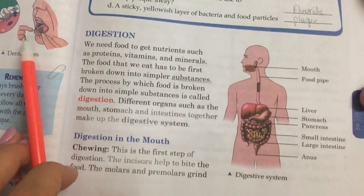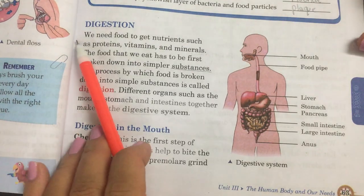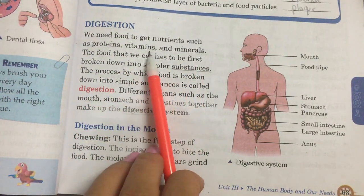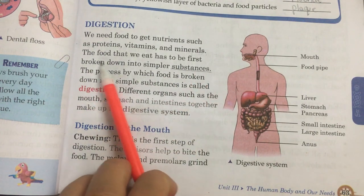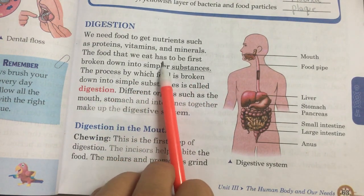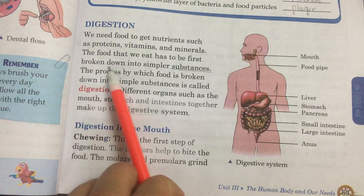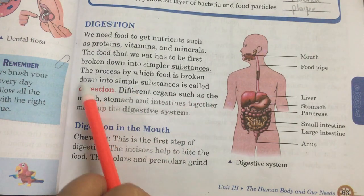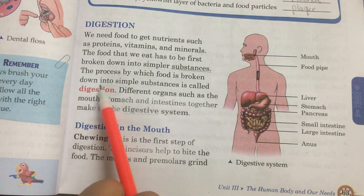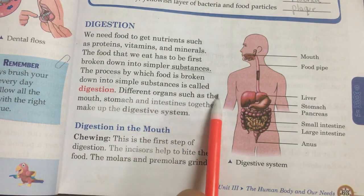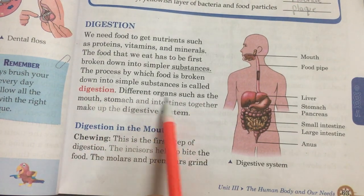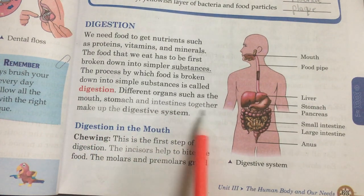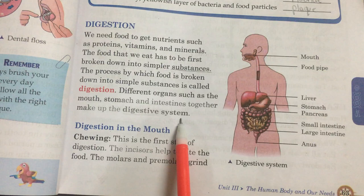Now about digestion. We need food to get nutrients such as proteins, vitamins and minerals. The food that we eat has to be first broken down into simpler substances. The process by which food is broken down into simple substances is called digestion. Different organs such as the mouth, stomach and intestines together make up the digestive system.